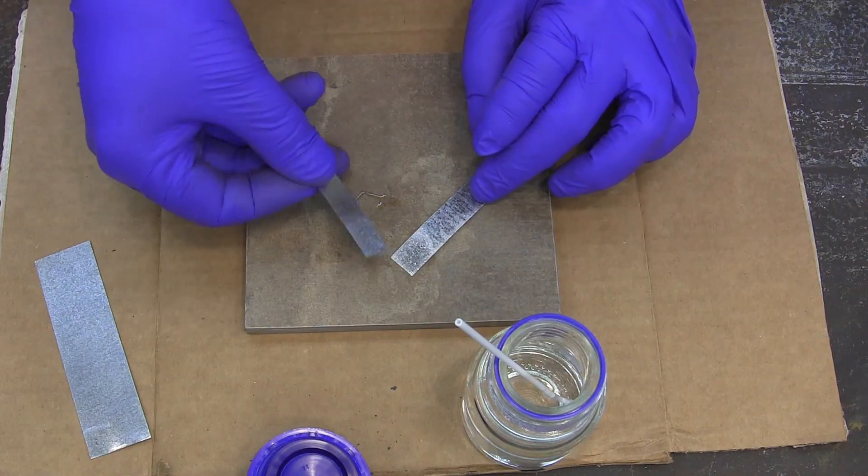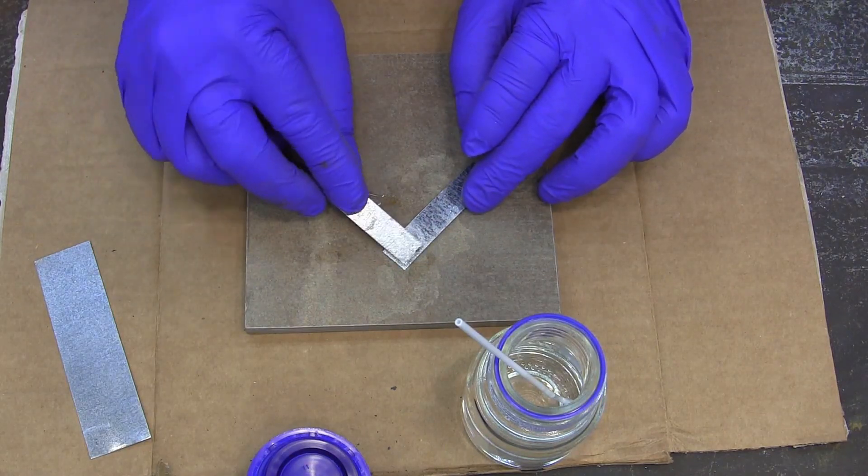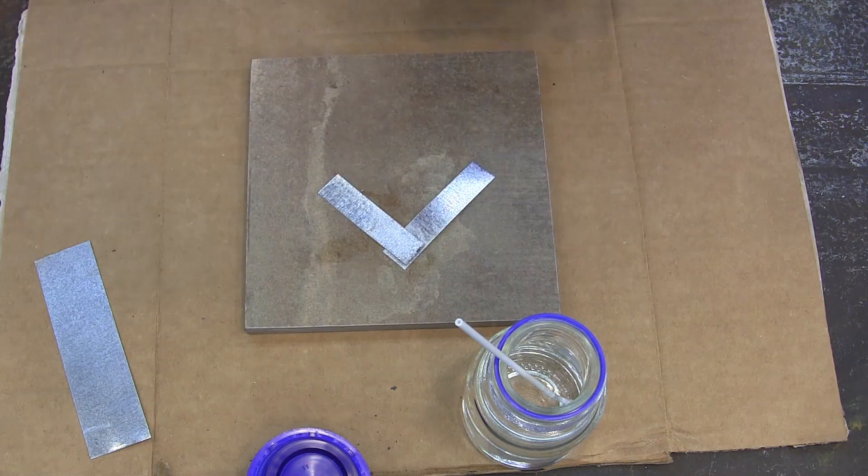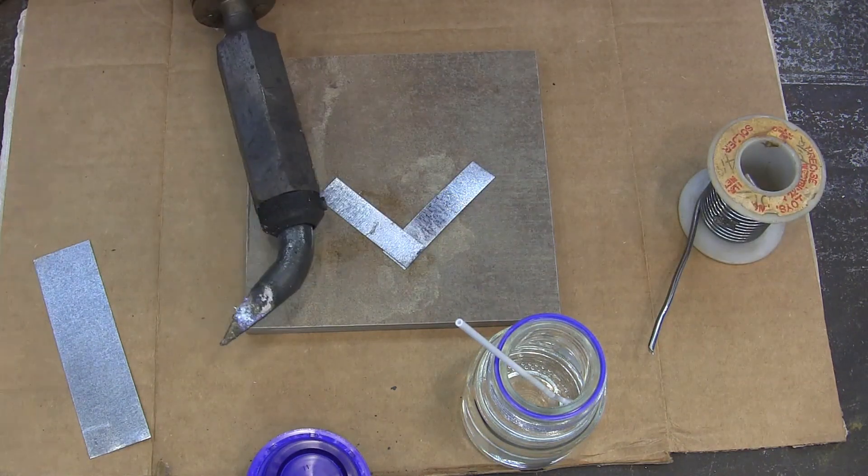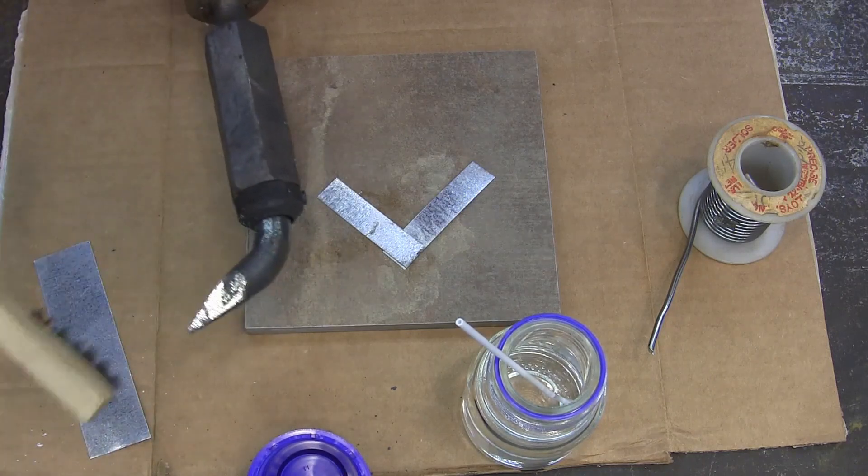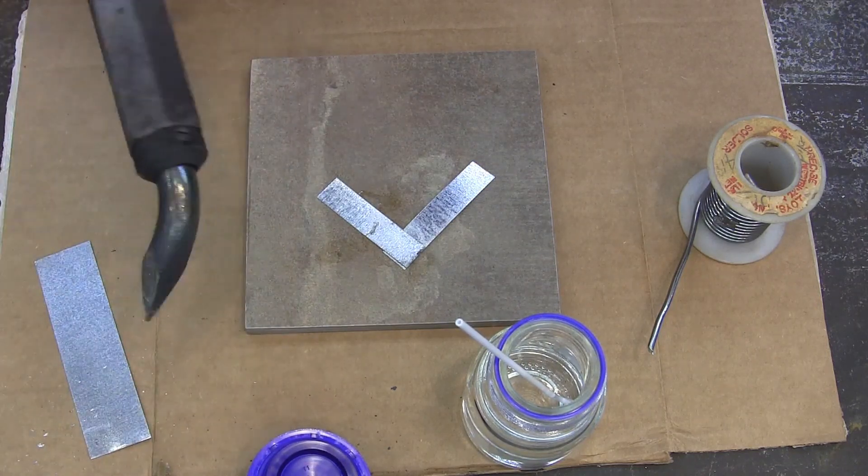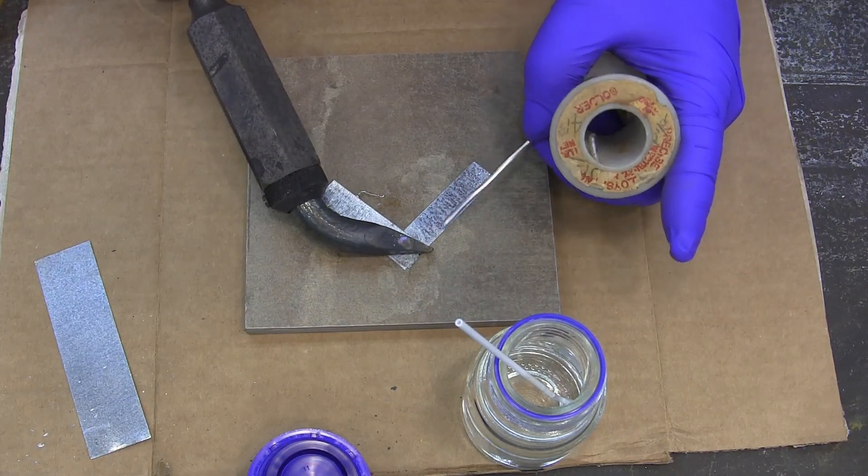All right, so now we're going to put the two sides together that were fluxed. And now all we have to do is heat that and apply some solder. We do want to get our soldering area clean. I'll take a brush and brush that off. And here we go. Just heat this up.